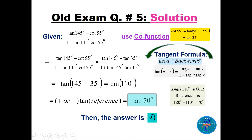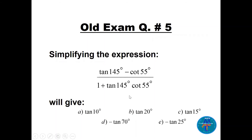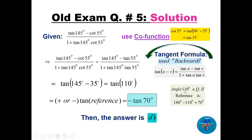Replacing cot(55°) with tan(35°) throughout, the expression becomes [tan(145°) − tan(35°)] / [1 + tan(145°)·tan(35°)]. This exactly matches the tangent difference formula applied backwards, giving tan(145° − 35°) = tan(110°). Since 110° is in quadrant two, its reference angle is 180° − 110° = 70°, and tangent is negative there, so the answer is −tan(70°), which is option D.